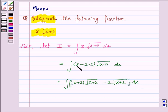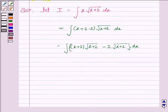We multiplied x plus 2 by under the root x plus 2 and minus 2 with under the root x plus 2. Now separating the integral we have x plus 2 to the power 3 by 2.